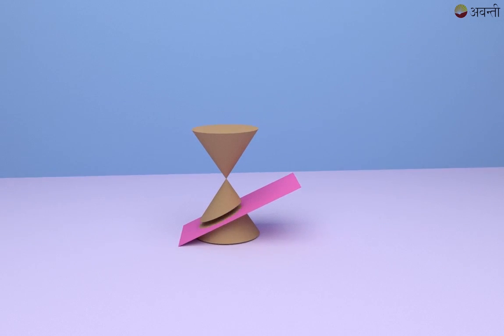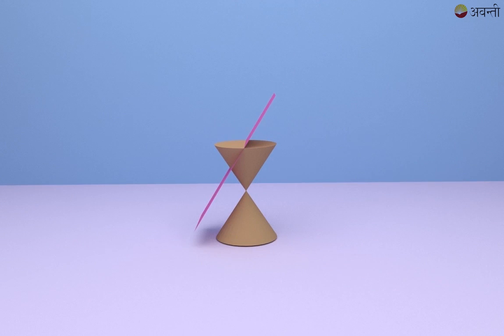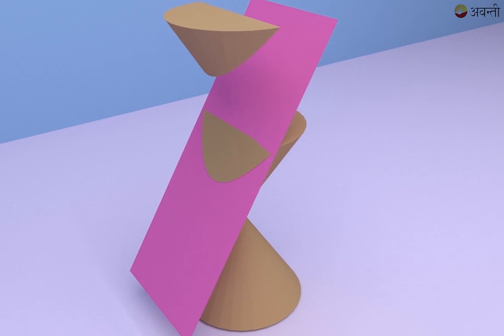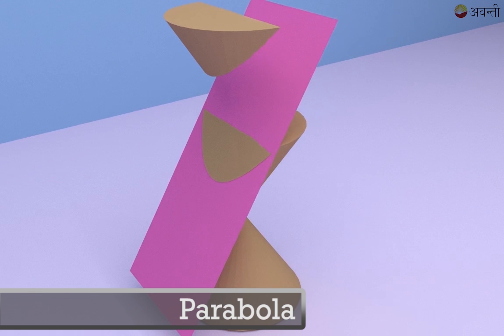Now in the third situation, I am going to increase the angle of my plane further and I have reached at an angle such that this plane is now parallel to my cone. At this angle, when we cut the cone, the new shape that we are now getting is called a parabola.